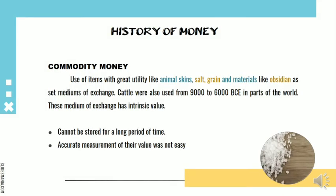Eventually, because of the problems arising from the system of bartering, our ancestors developed a new system: the use of commodity items with great utility like animal skins, salt, grain, and materials like obsidian as set mediums of exchange. These are termed commodity money because they had intrinsic value.